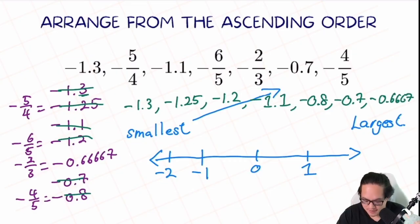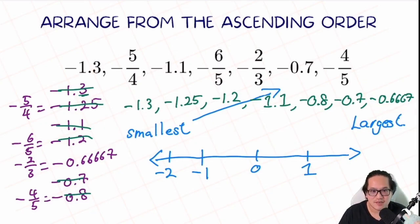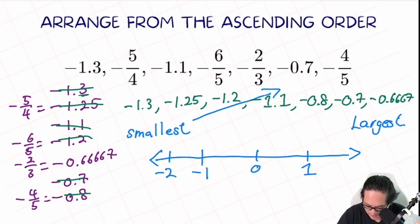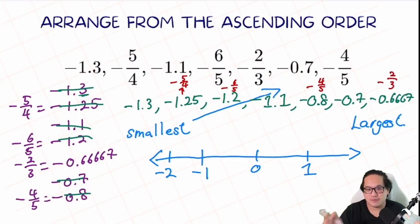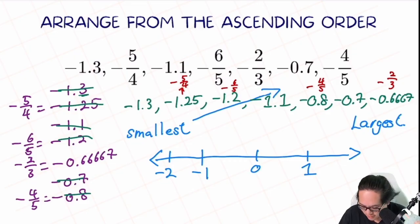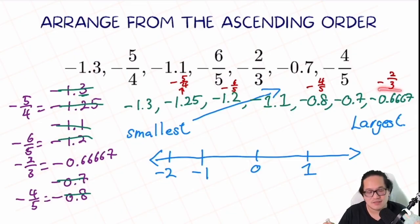So in this question the smallest number is negative 1.3 and the largest is negative 0.6667. Now the last step: convert all numbers back to their original form. Negative 1.3 stays, negative 1.25 is negative 5/4, negative 1.2 is negative 6/5, negative 1.1 stays, negative 0.8 is negative 4/5, negative 0.7 stays, and the last is negative 2/3. So the ascending order is: negative 1.3, negative 5/4, negative 6/5, negative 1.1, negative 4/5, negative 0.7, then negative 2/3.